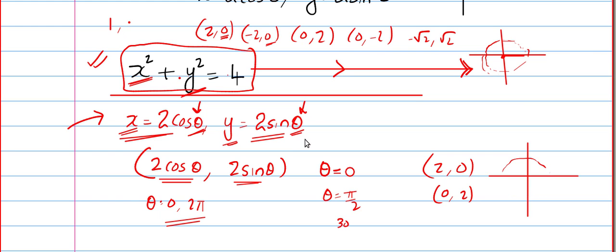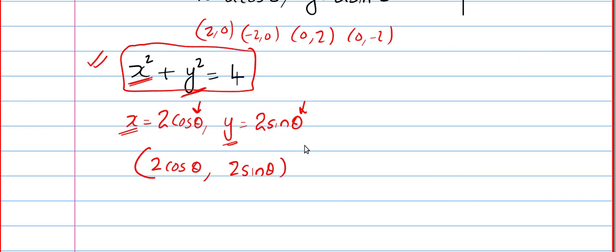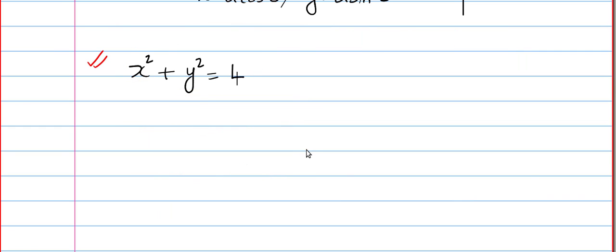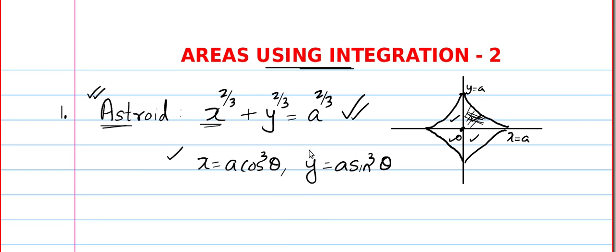In many situations, parametric form will be very easy to handle. Even in the last video we found the area of the circle using Cartesian form, but you can try it with the parametric form — once you watch this video you'll get that idea by yourself. Finding area will be much easier using the parametric form.